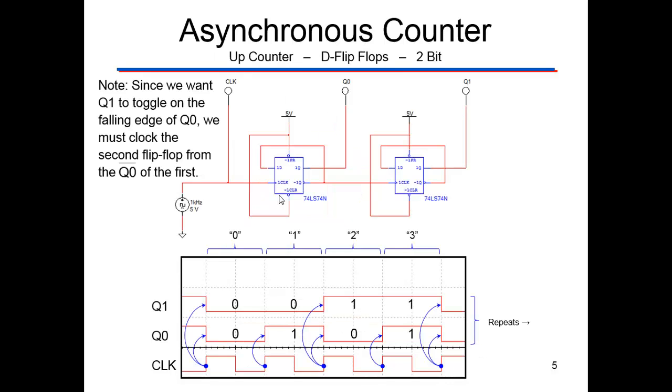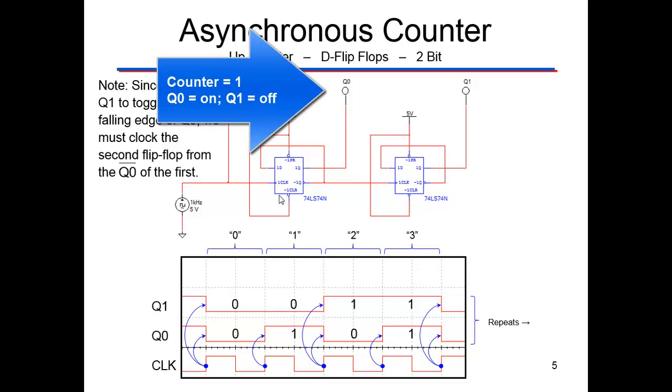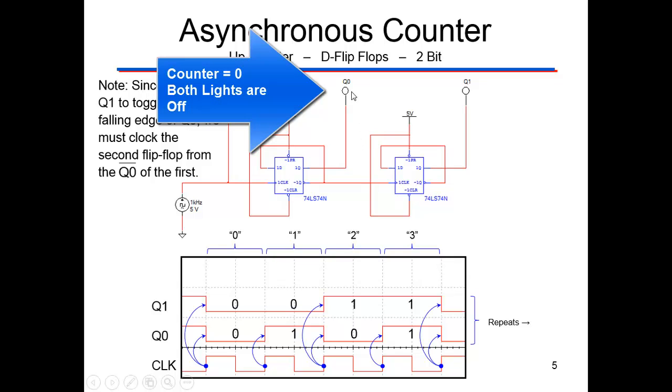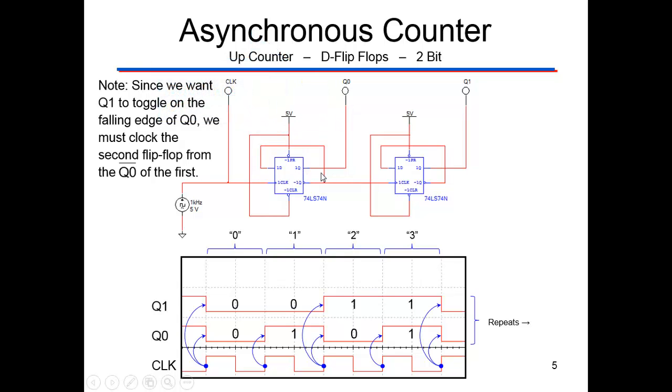This would be a two-bit counter. It would count zero, one, two, three. We start with the clock. Again, not Q is tied back into D. Preset and clear are both tied to five volts to keep them inactive. So this is actually the least significant bit. It's smaller than the way we normally, opposite the way we normally think of it.